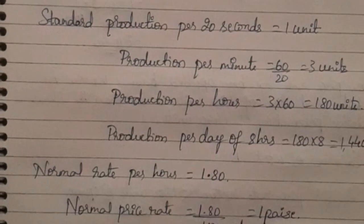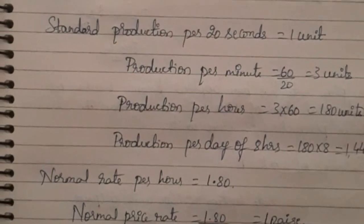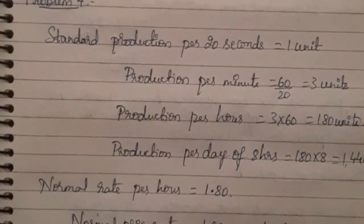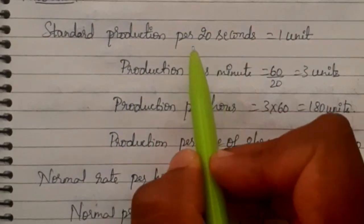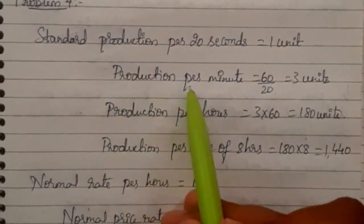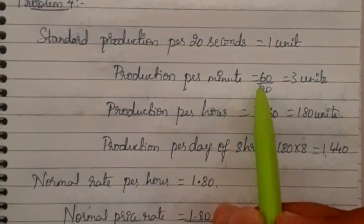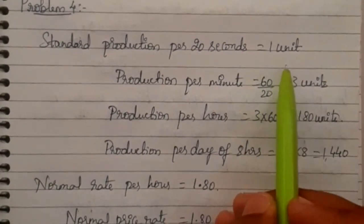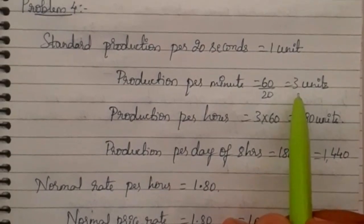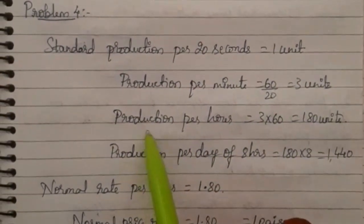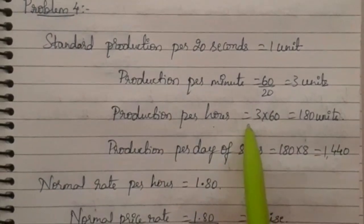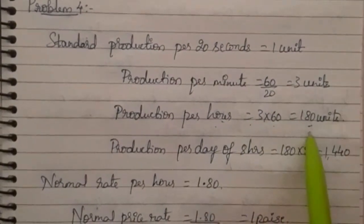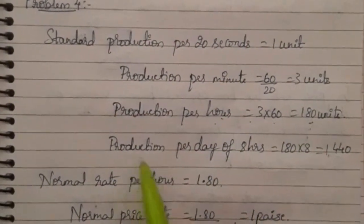The solution: standard time permitted is 20 seconds, meaning 20 seconds are required to produce one unit. So production per minute is 60 seconds divided by 20 seconds, which equals 3 units per minute. Production per hour is 3 units multiplied by 60 minutes, giving 180 units per hour.